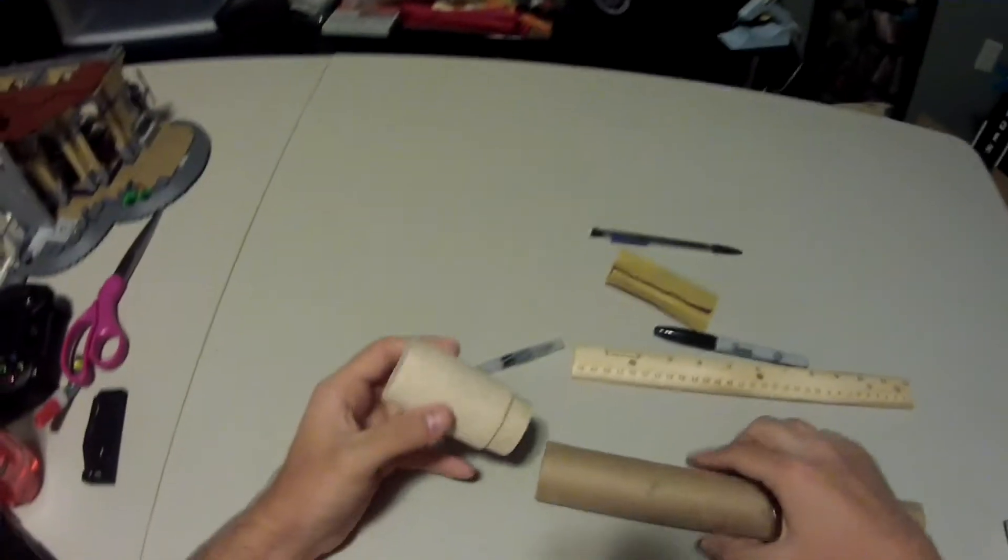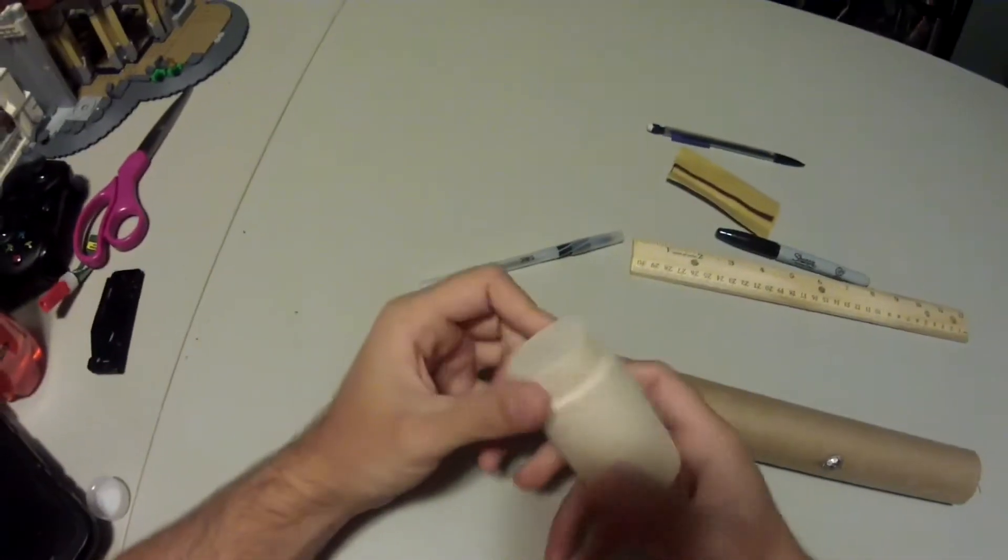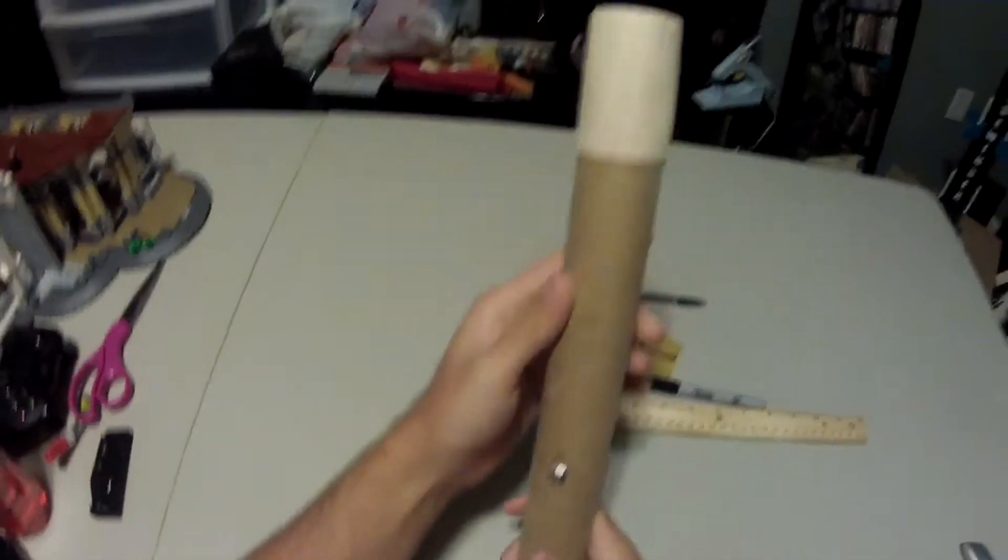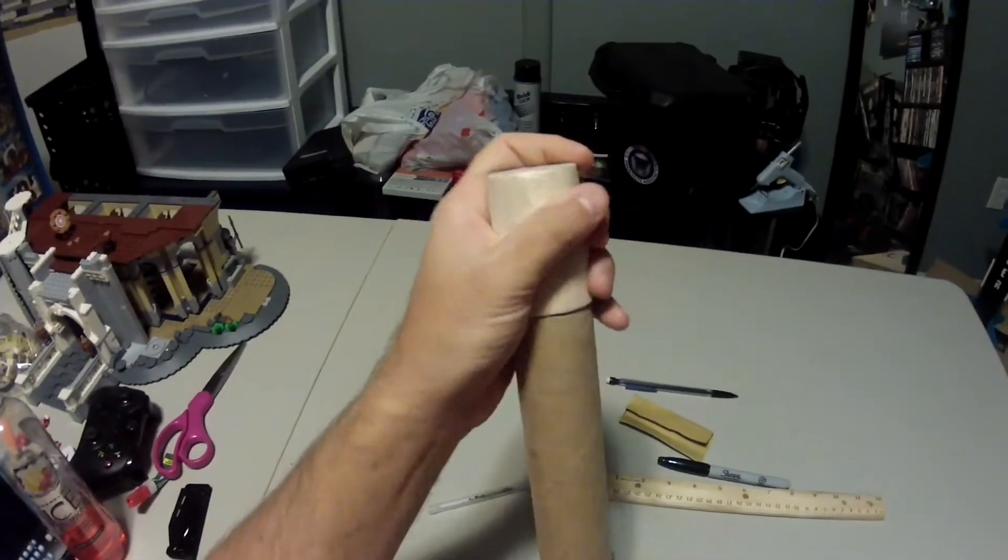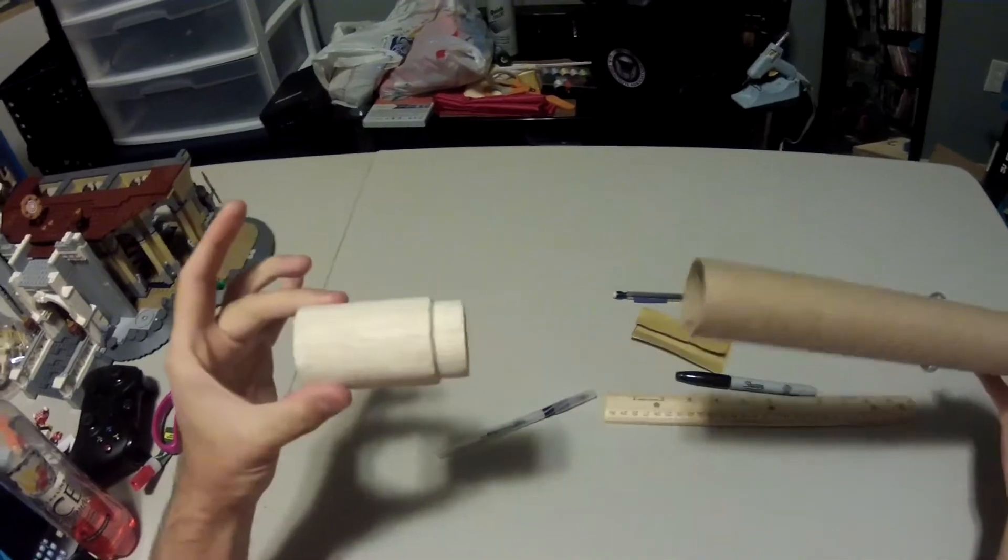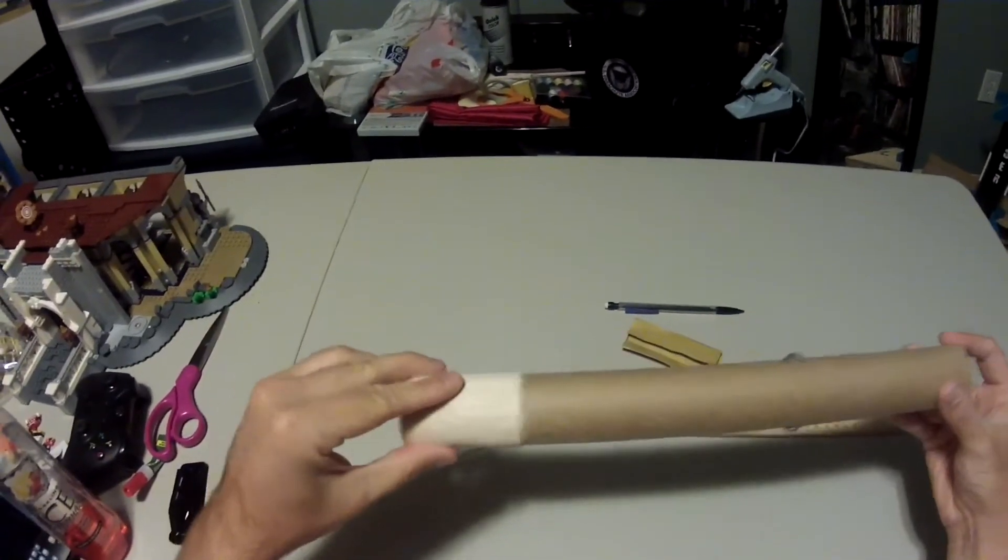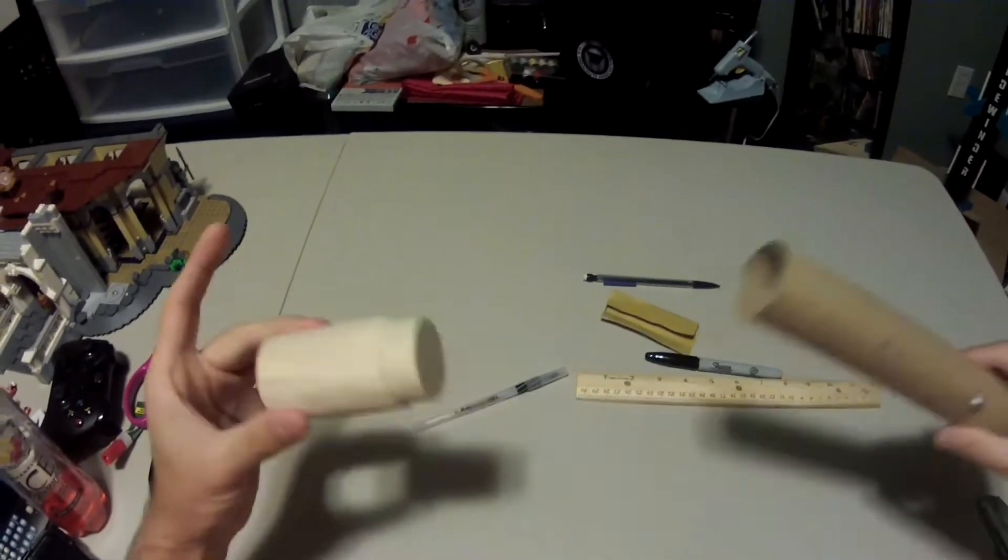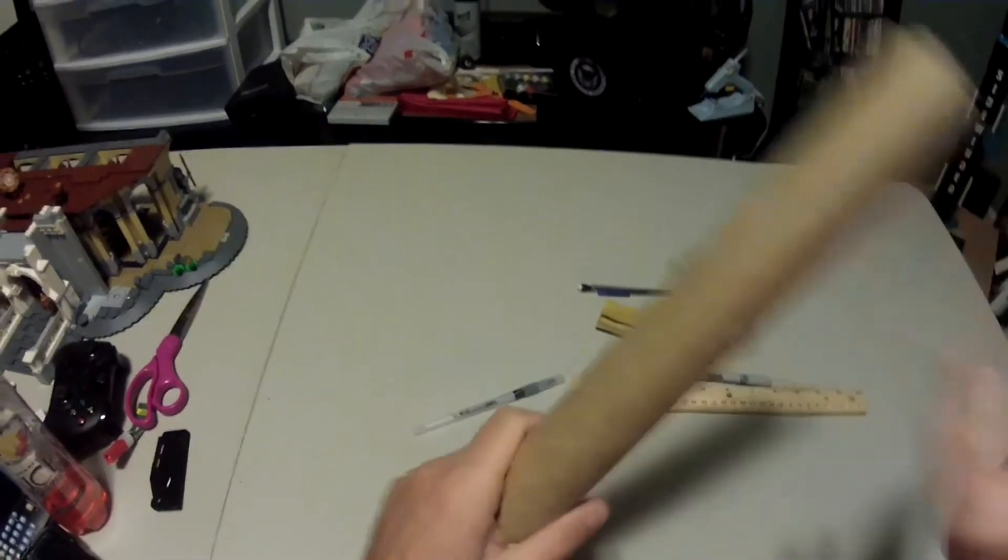Once you have it sanded to perfection it should be snug but not so snug it's hard to come out. You should be able to twist it while it's in there but it shouldn't just pop loose with some shaking. As you can see I can pull mine out with relative ease but if I shake it it just won't come out. If I jerk it upside down my piston won't push it out.